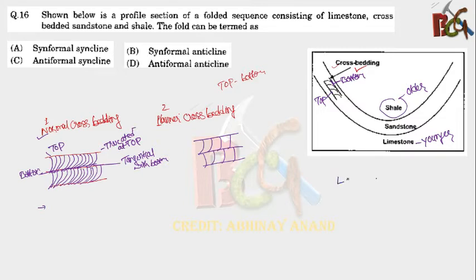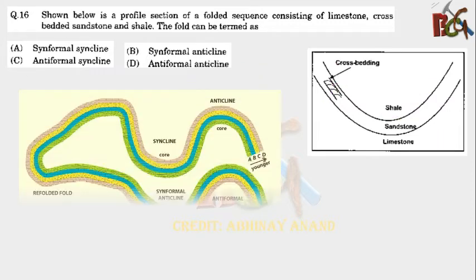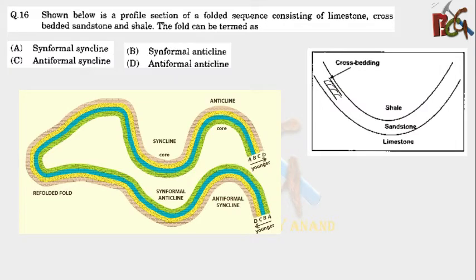So the sequence is limestone, sandstone and shale. This is younger to older. Now let's see these terms. This is the best diagram to explain all these four terms. So again, this is younger and this is older. The same situation we found in this case. Shale is older and limestone is younger. So this is synformal syncline.